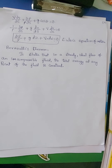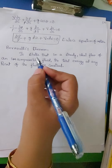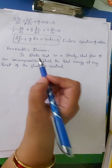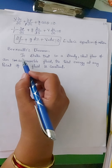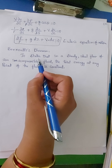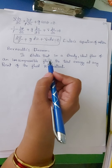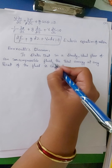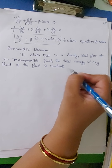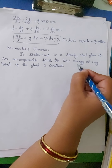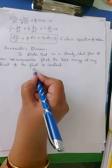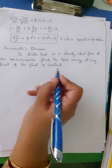In the previous class, we studied Euler's theorem. Today, let us study Bernoulli's theorem. The statement of Bernoulli's theorem goes like this: it states that in a steady, ideal flow of an incompressible fluid, the total energy at any point of the fluid is constant.